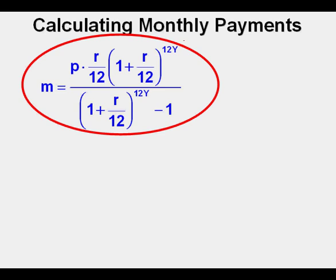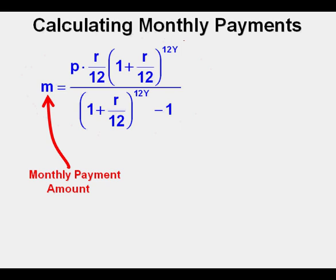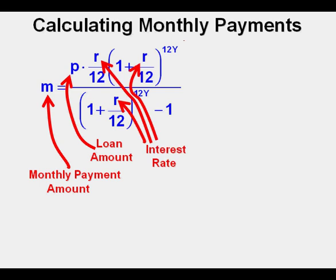Let's start by identifying the key components of the formula. M is the amount of the monthly payment. P is the starting amount, or principal, of the loan. R is the interest rate amount. This input, interest rate, shows up in three different places in the formula. Also, this number is not in percentage but in decimal form, so a 7% interest rate will go in as .07.